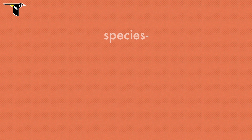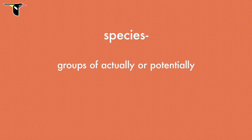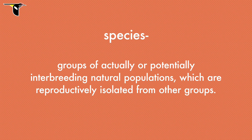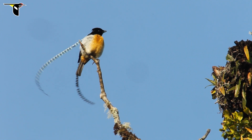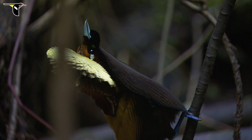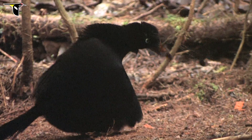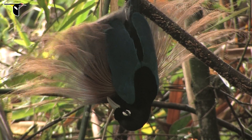Before we explain speciation, let's talk about what we mean when we use the word species. According to the classic definition, species are groups of actually or potentially interbreeding natural populations which are reproductively isolated from other groups. Speciation begins when groups become separated in space or become different enough in form and behavior that individuals from one group no longer regularly mate with individuals outside the group.